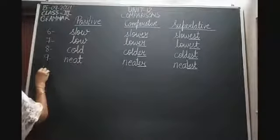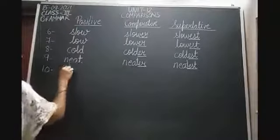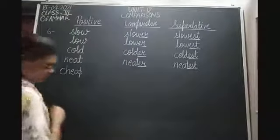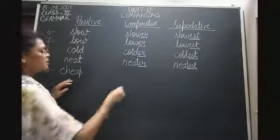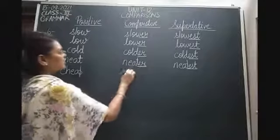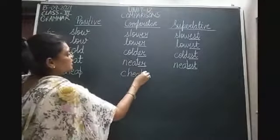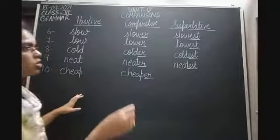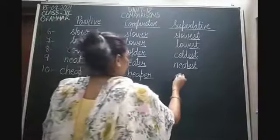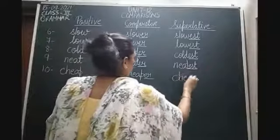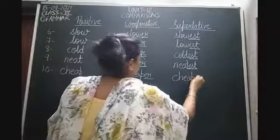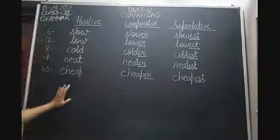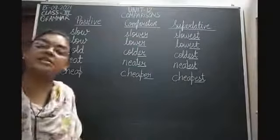The tenth word is cheap — C, H, E, A, P. The comparative degree: we add ER at the end, so it becomes cheaper. The superlative degree: we add EST at the end, so it becomes cheapest. So in all these ten words we have formed the comparative degree by adding ER and the superlative degree by adding EST at the end.